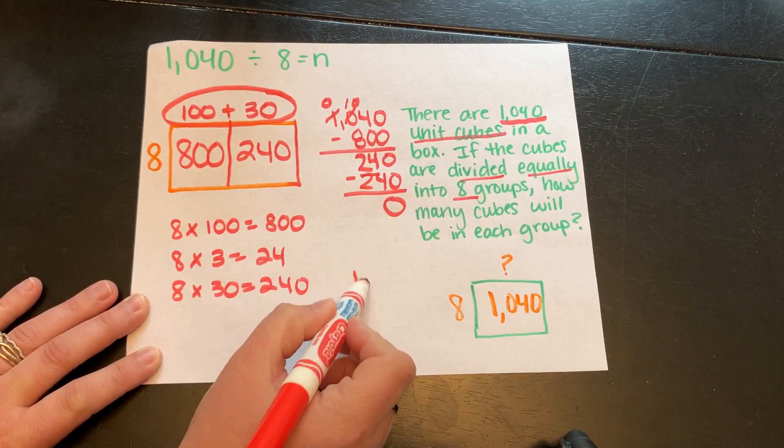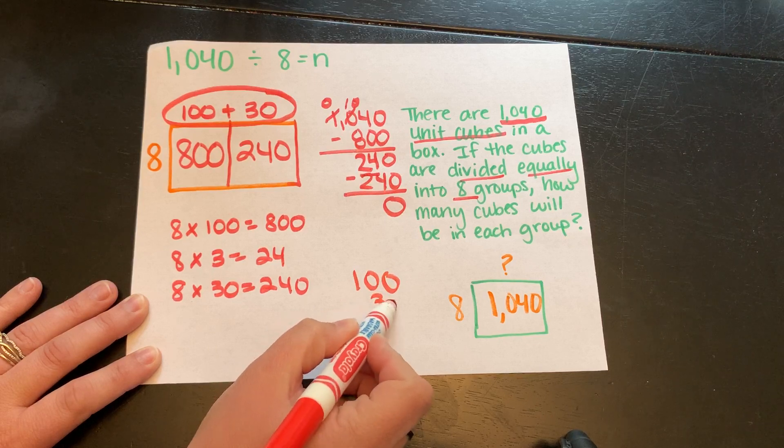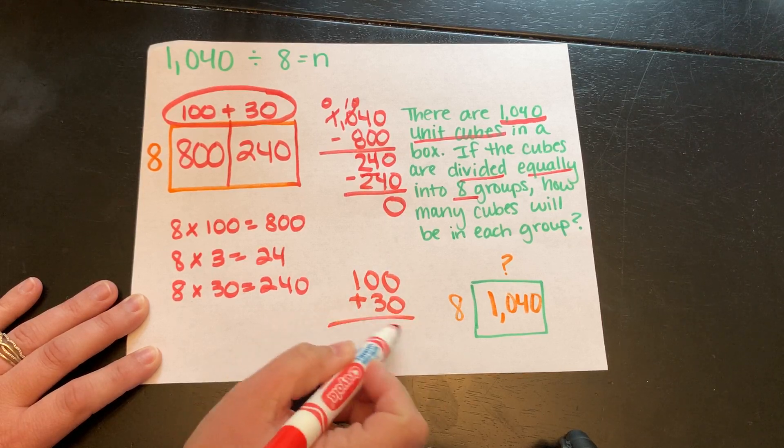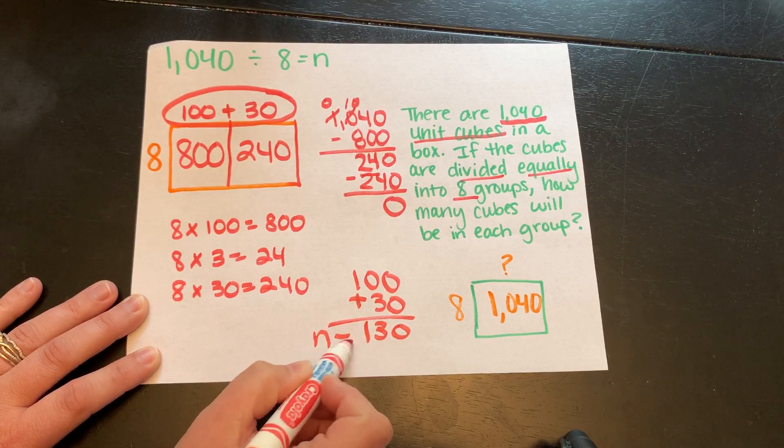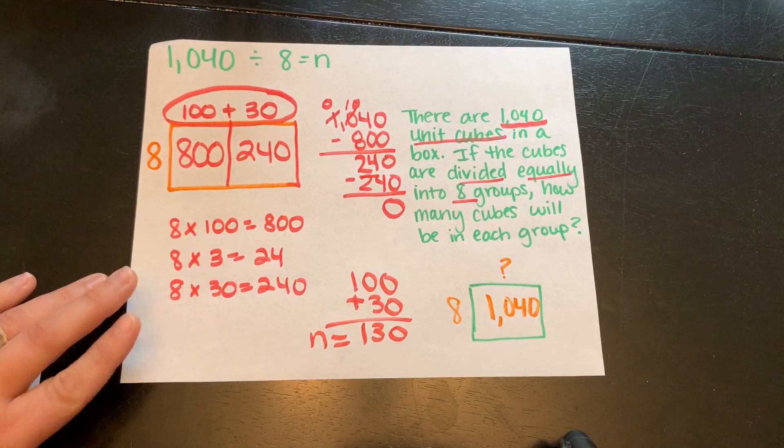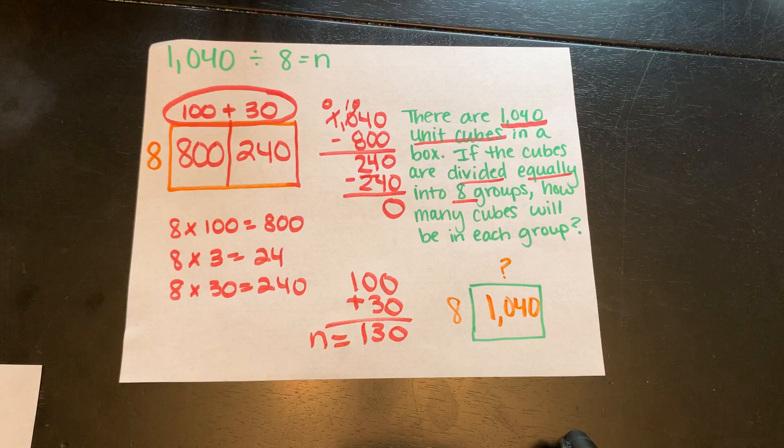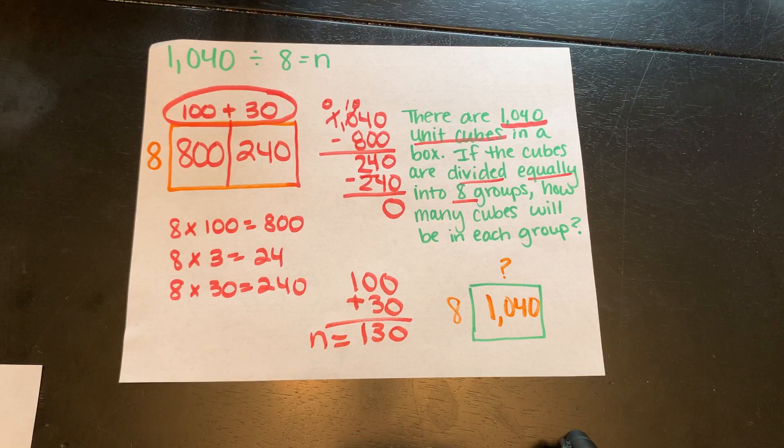So 100 plus 30, making sure to line up my place values, is 130. So the unknown number, the quotient for our final answer is 130.